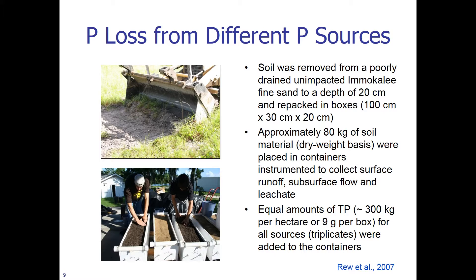Now let's look at P losses from different P sources in an actual experiment. Soil was removed from a poorly drained, unimpacted Immokalee fine sand to a depth of 20 centimeters and repacked in boxes 100 by 30 by 20 centimeters. Approximately 80 kilograms of soil on a dry weight basis were placed in containers instrumented to collect surface runoff, subsurface flow, and leachate. Equal amounts of total P — approximately 300 kilograms per hectare or 900 grams per box — were added in triplicates.